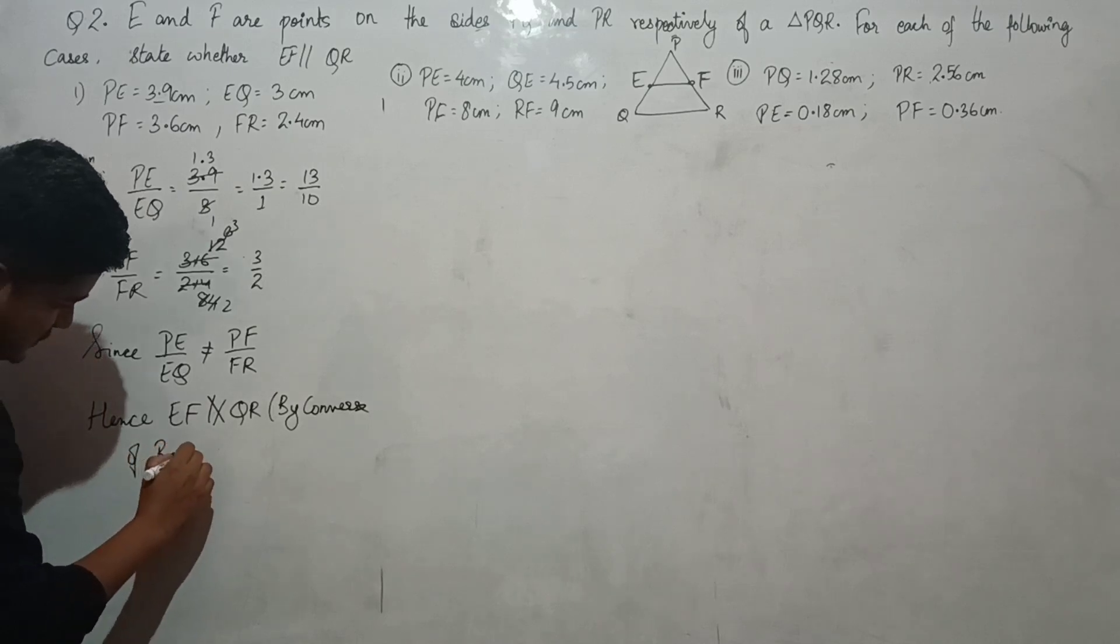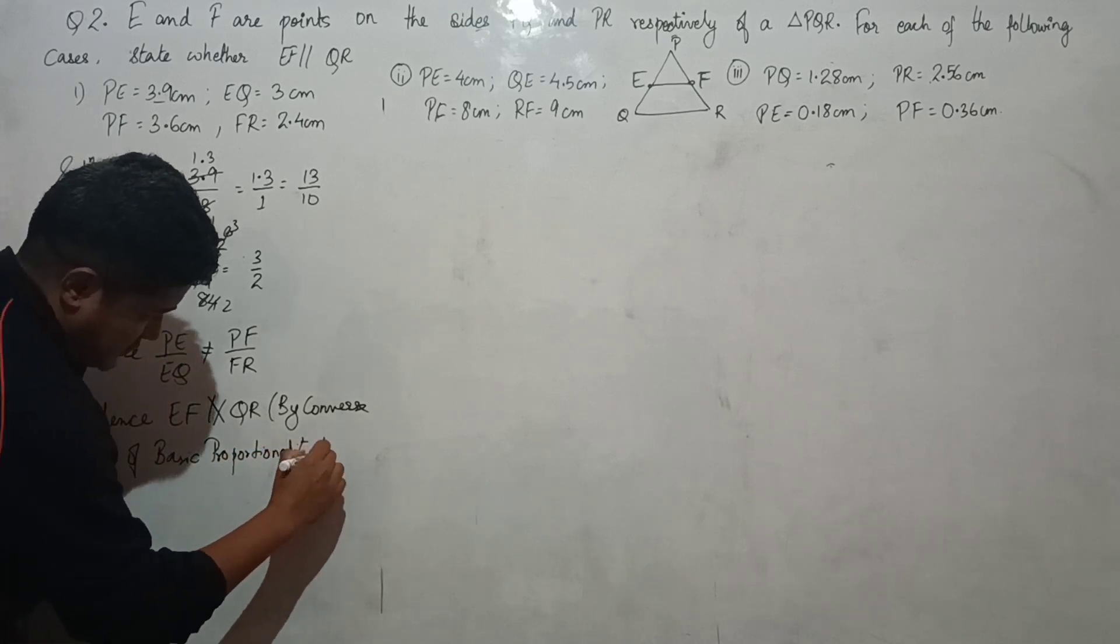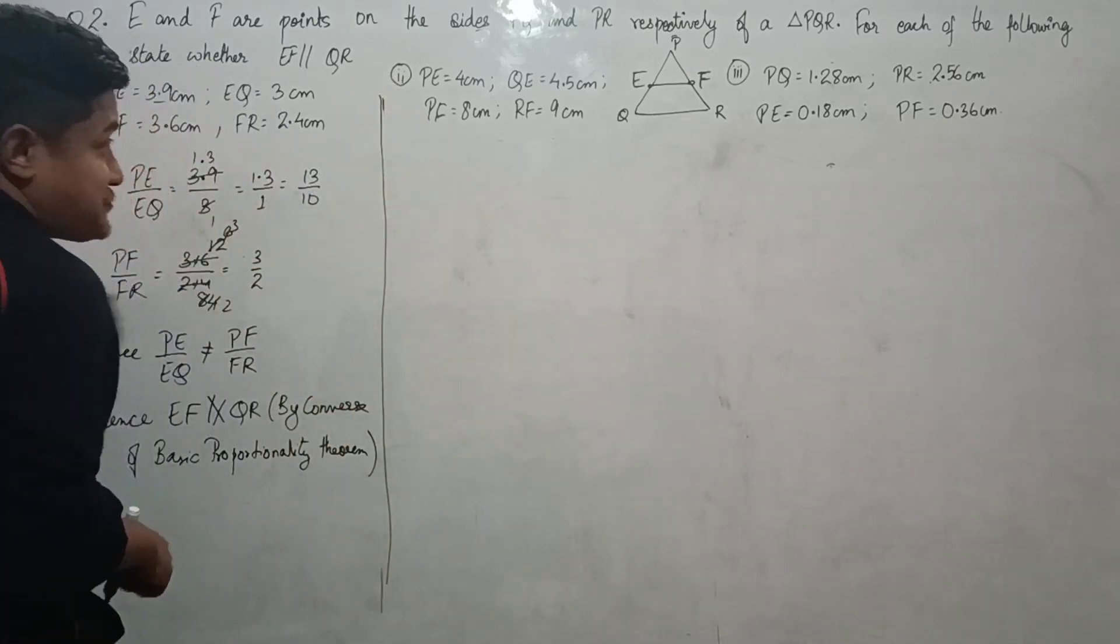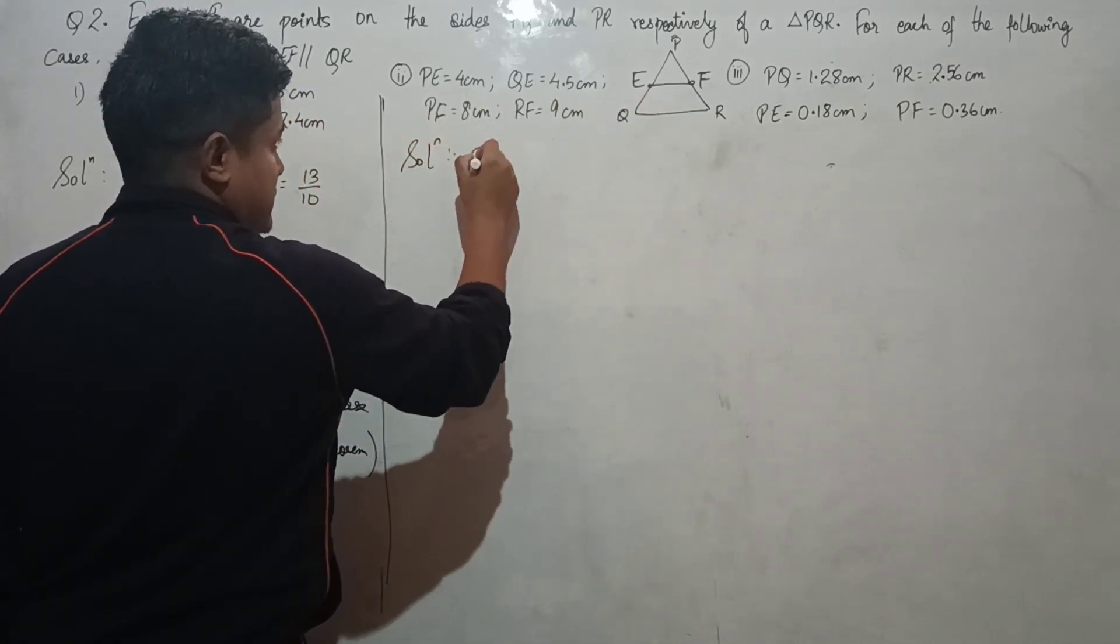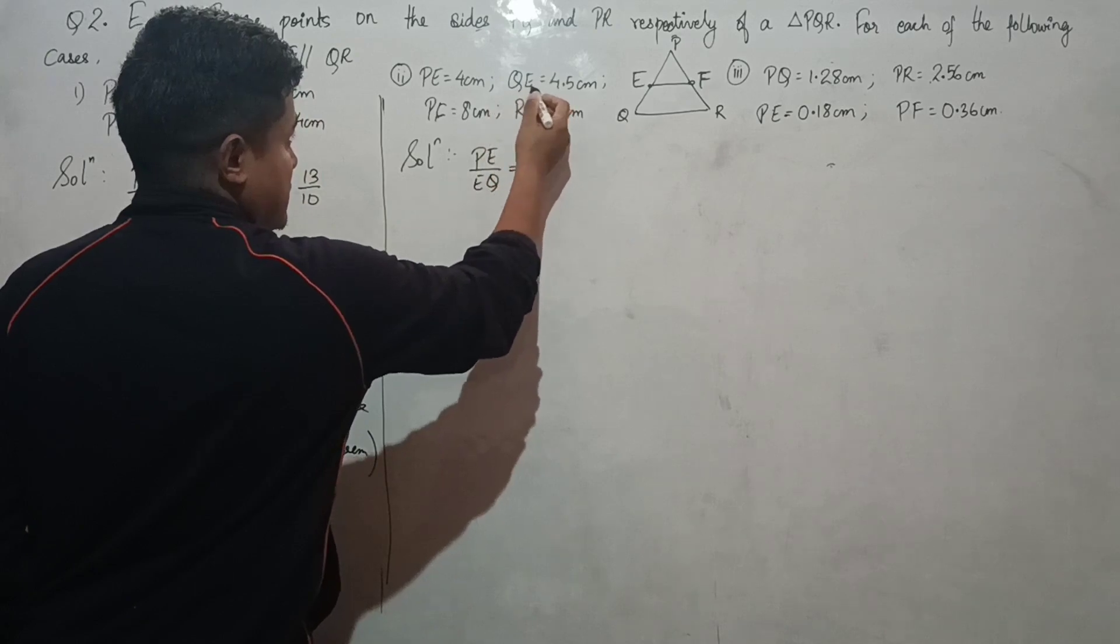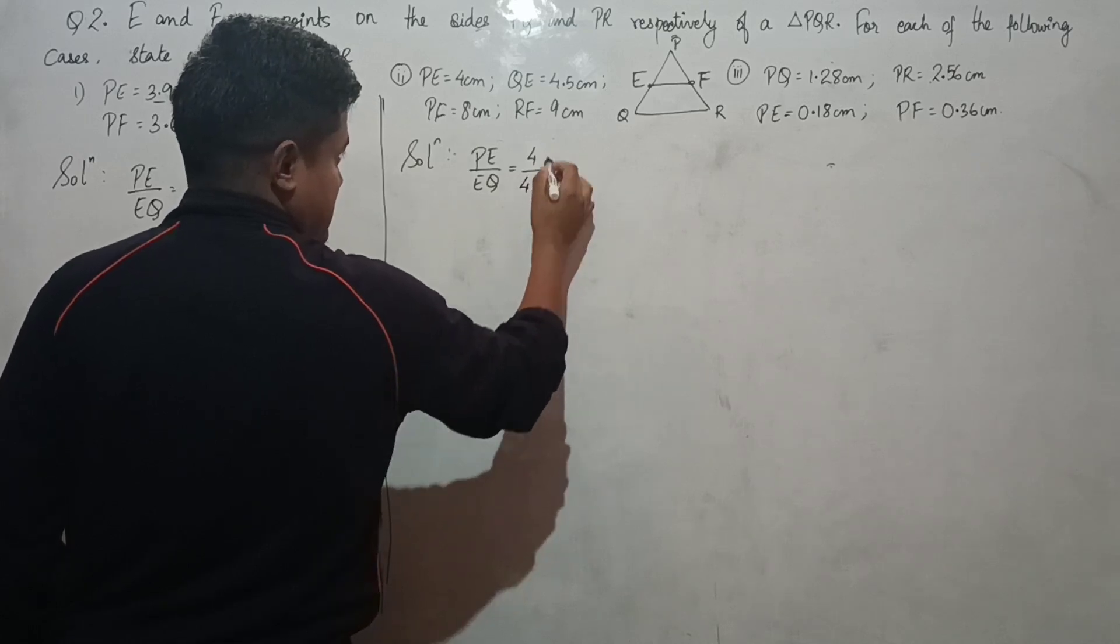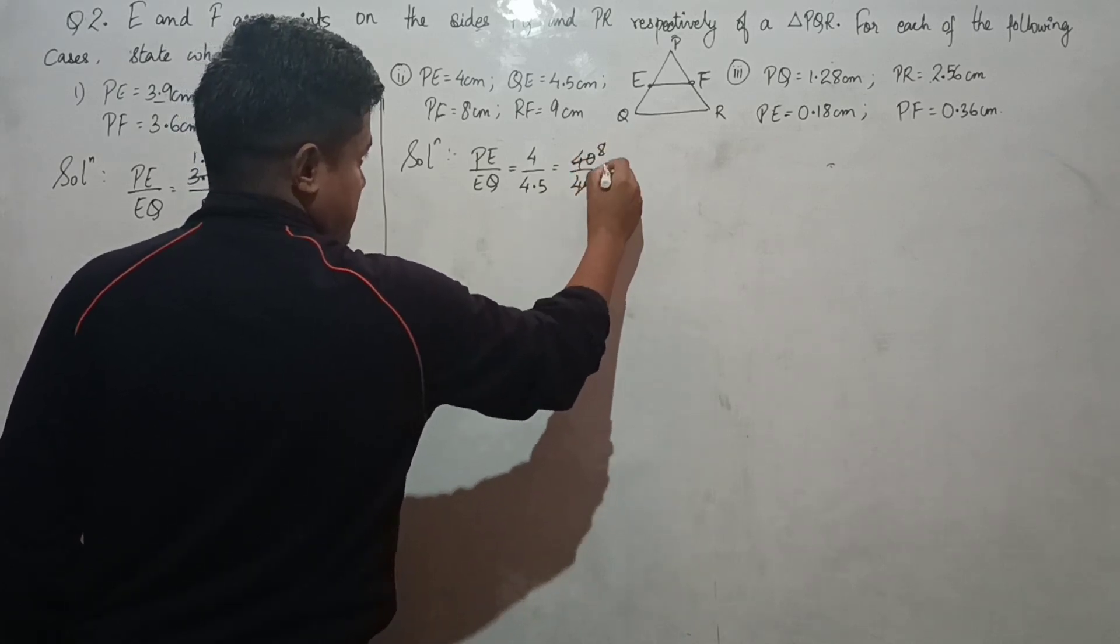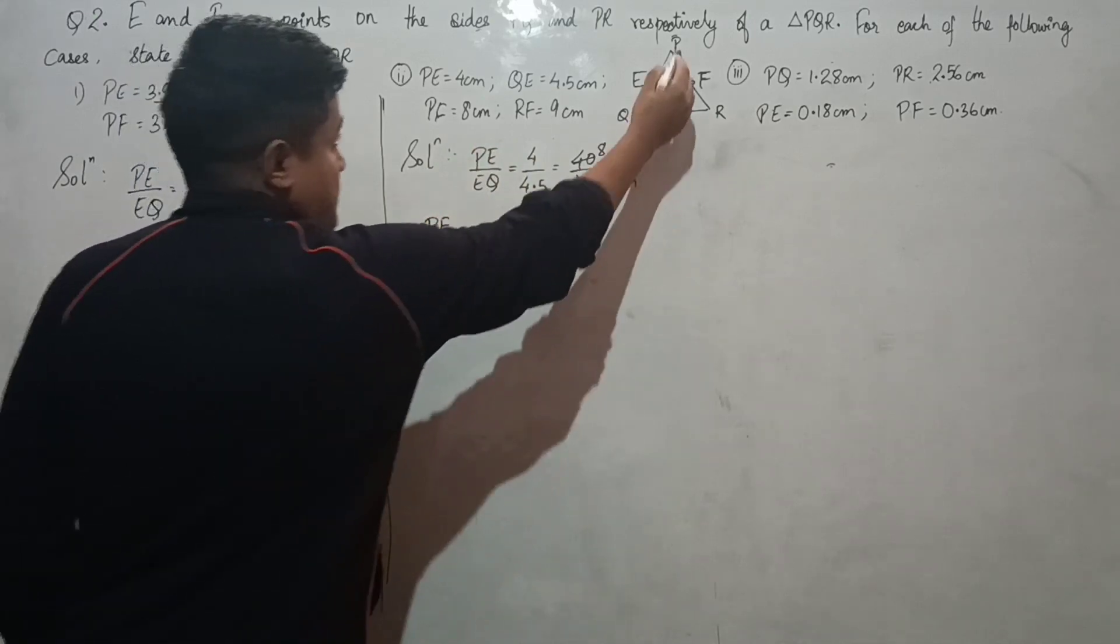Next case: PE/EQ where PE is 4 and EQ is 4.5. Removing the decimal point, we get 40/45 which simplifies to 8/9. And PF/FR...